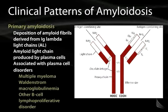When we refer to amyloidosis, we can refer to either primary or secondary amyloidosis in terms of the way in which it can present in patients.